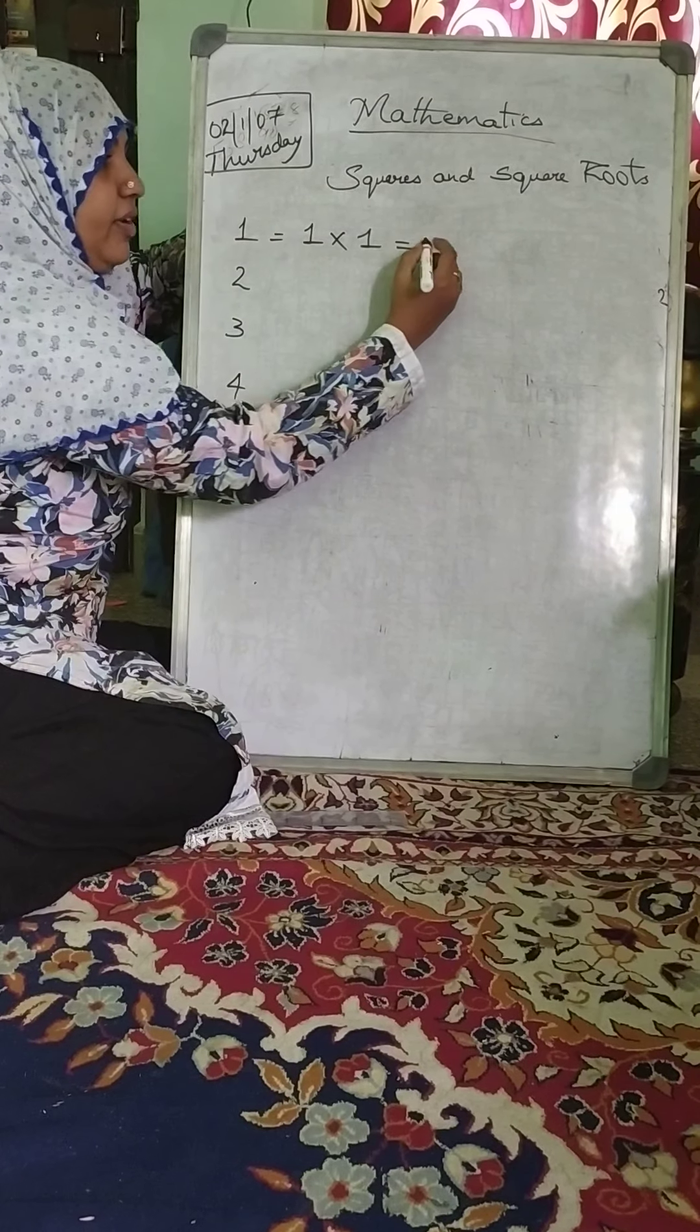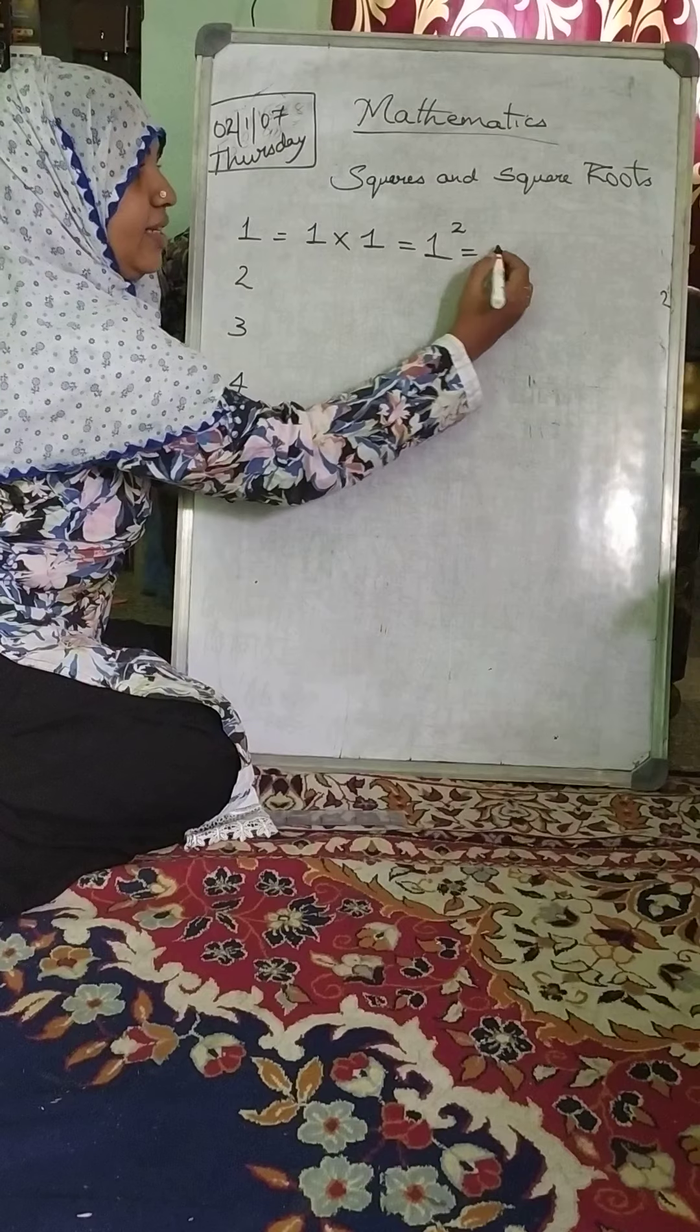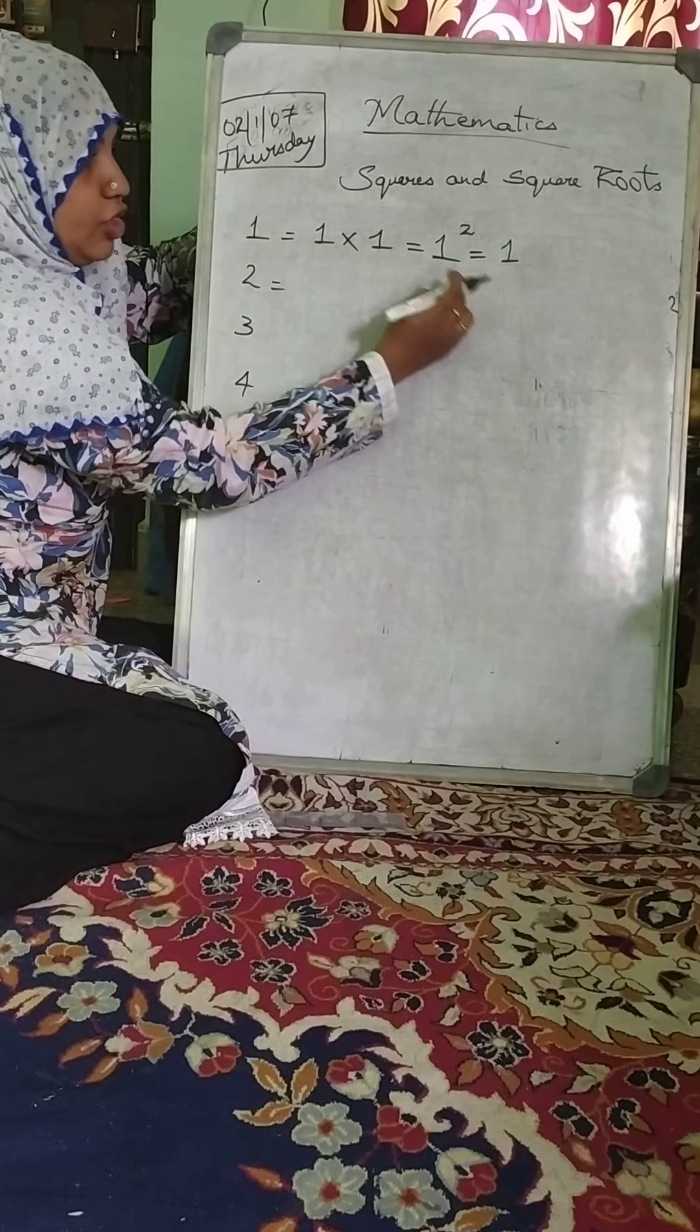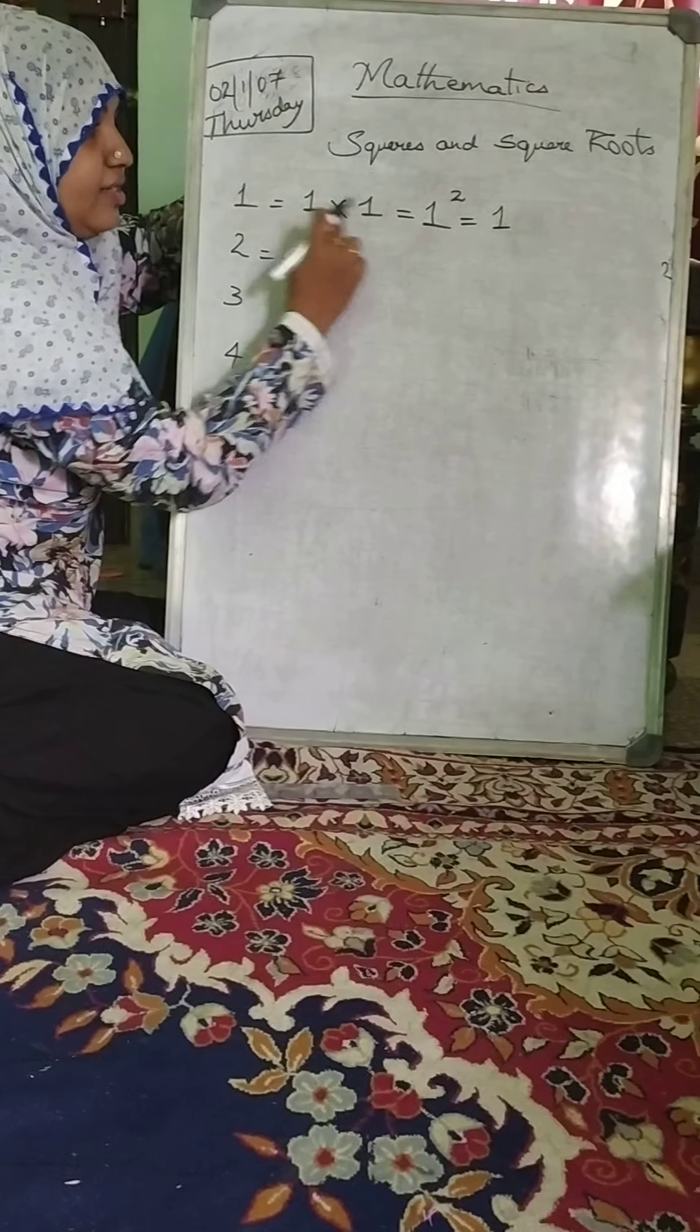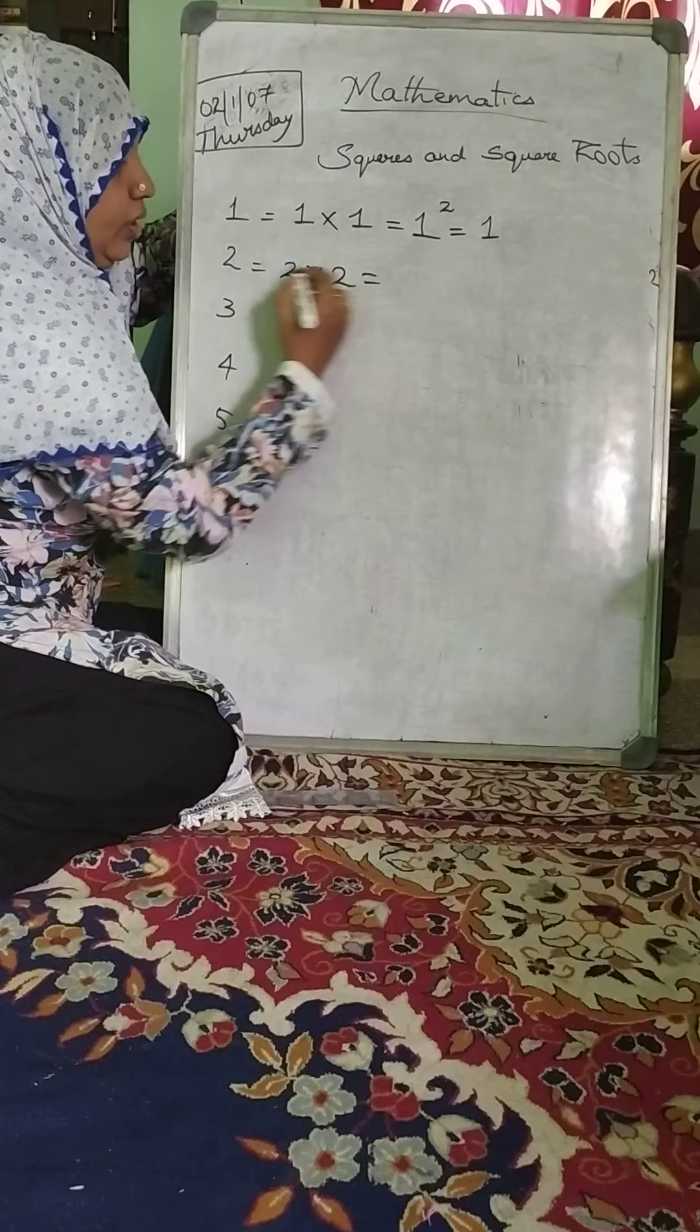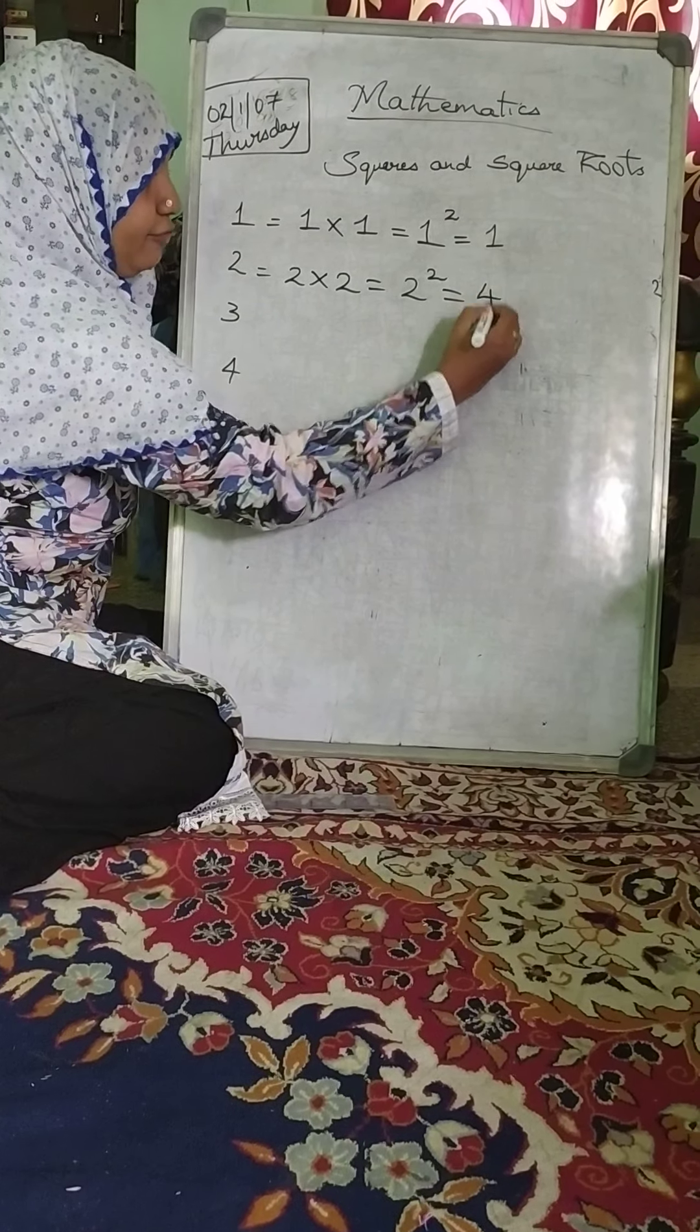Square, 1 square, we write it as like this, 1 square is 1. So 1 square is 1×1=1. It is not 1×2, no, it is 1×1=1. Like that when we write 2, we multiply by itself, we get 2 square, 2×2=4.